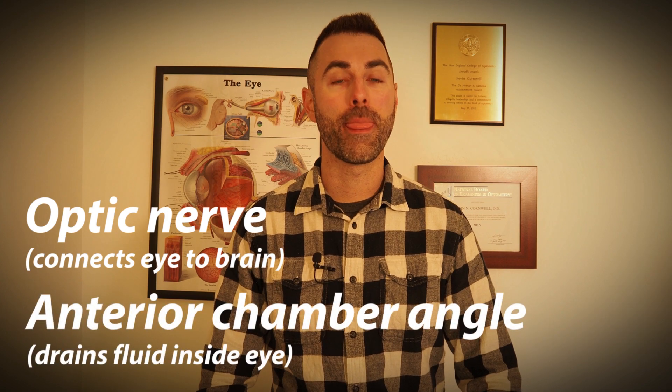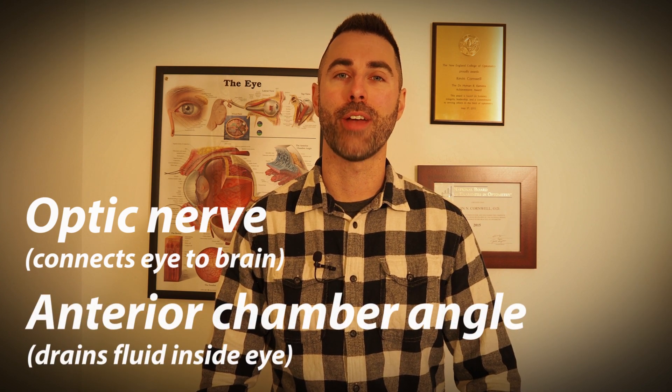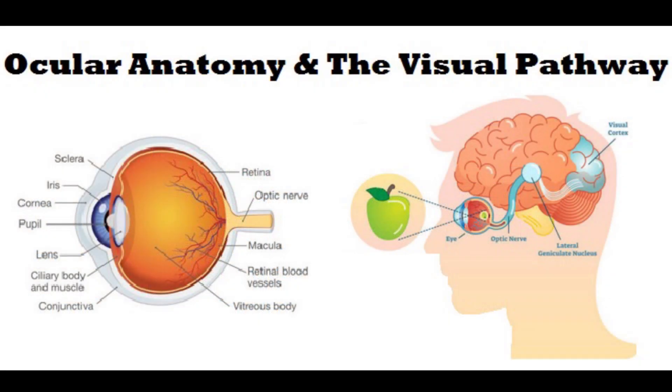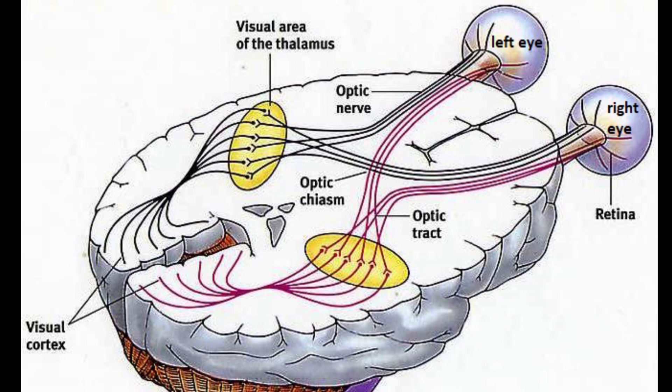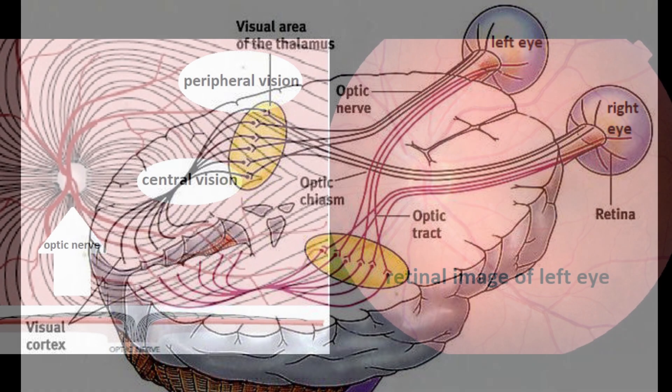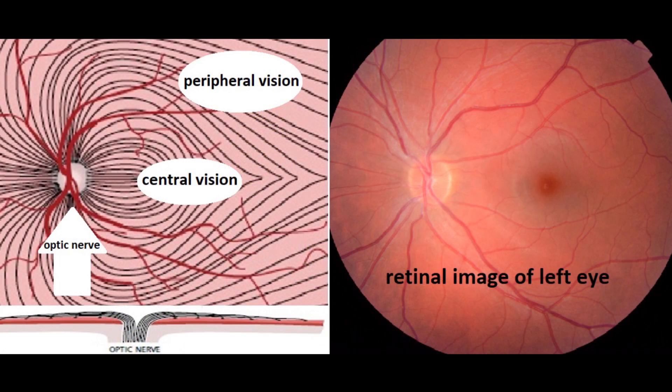I want to take a moment and explain two different anatomical structures inside the eye so all of this makes a little bit more sense. One is the optic nerve, and two is the anterior chamber angle. The optic nerve is the main part of the eye affected by glaucoma, and it's basically an extension of our brain that transmits our vision from our eye to our brain. The optic nerve consists of little tiny bundles of cables we call axons that transmit our central and peripheral vision back to our visual cortex for processing.